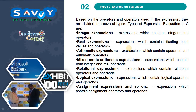Now, types of expression evaluations. Based on the operators used in the expression, they are divided into several types. Types of expression evaluation in C are: Integral expressions — expressions which contain integers and operators. Real expressions — expressions which contain floating point values and operators. Arithmetic expressions — expressions which contain operands and arithmetic operators.